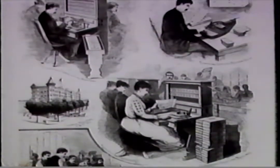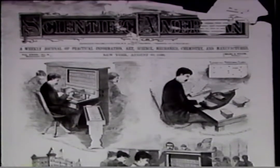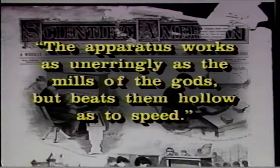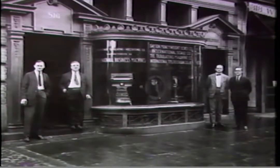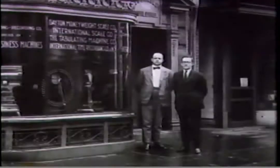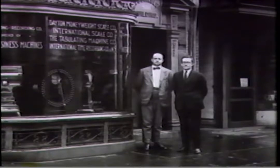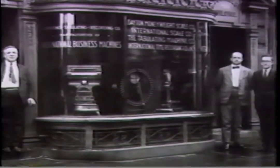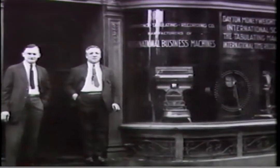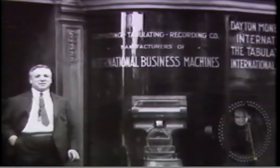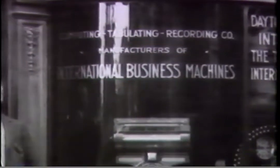Hollerith's card system was hailed as a success on the cover of national magazines. One writer praised: 'The apparatus works as unerringly as the mills of the gods, but beats them hollow as to speed.' Hollerith formed the Tabulating Machine Company in 1896, and after a series of mergers and acquisitions, in 1924, the company became known as International Business Machines — now more commonly called IBM.